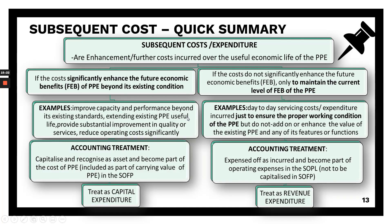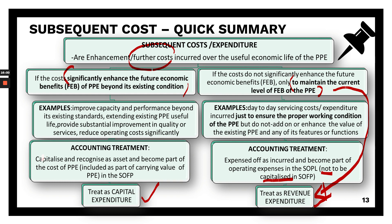In summary, the most important question for subsequent costs is: will the further cost incurred over the useful life significantly enhance the future economic benefits? If yes, it will be capitalized — meaning it becomes part of the cost and is included. If no, it is just to maintain the current level of the PPE and will be treated as revenue expenditure and not capitalized. Capitalization applies only if the expenditure can significantly enhance the future economic benefits beyond the existing standards of performance or condition.